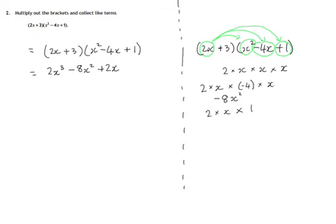Now, let's continue doing this, but this time we now do the second term, the positive 3 times the x squared, positive 3 times the negative 4x, and positive 3 times the positive 1. So let's sort that lot out.